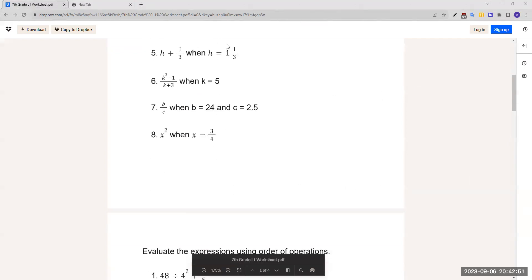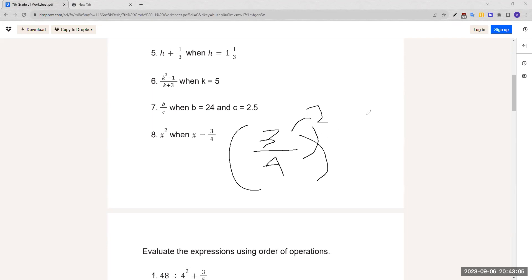x squared when x equals 3 over 4. So 3 over 4 squared. We have to distribute this squared among the 3 and the 4, so it would be 3 times 3, which equals 9 over 4 times 4, which would equal 16, which would be our final answer.